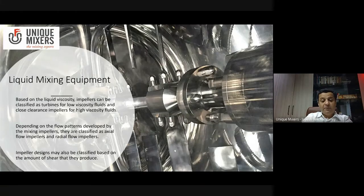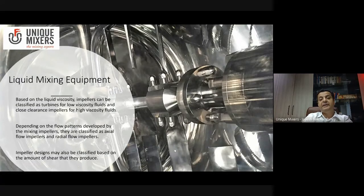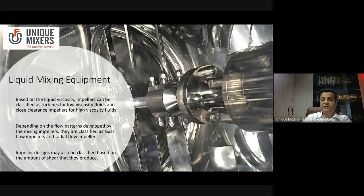However, the most common way to classify liquid mixing equipment is based on flow patterns. You can have axial mixing and radial mixing, and accordingly you have impellers which generate axial flow and impellers which generate radial flow. In some cases there is a need for adding shear to the mixed mass, and impellers can also be classified based on the amount of shear they produce.